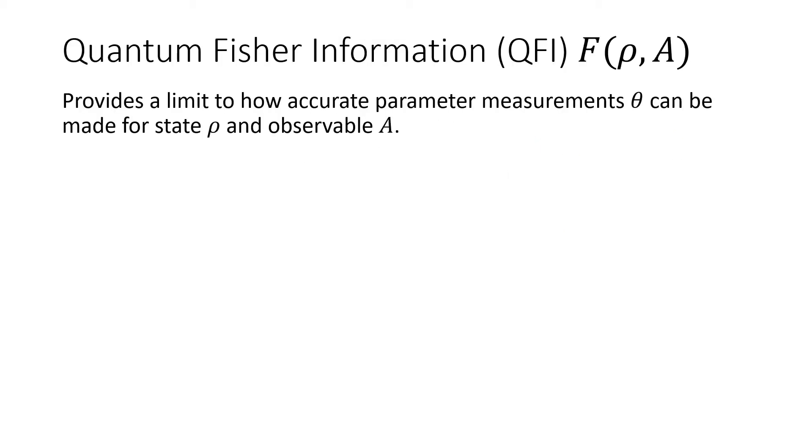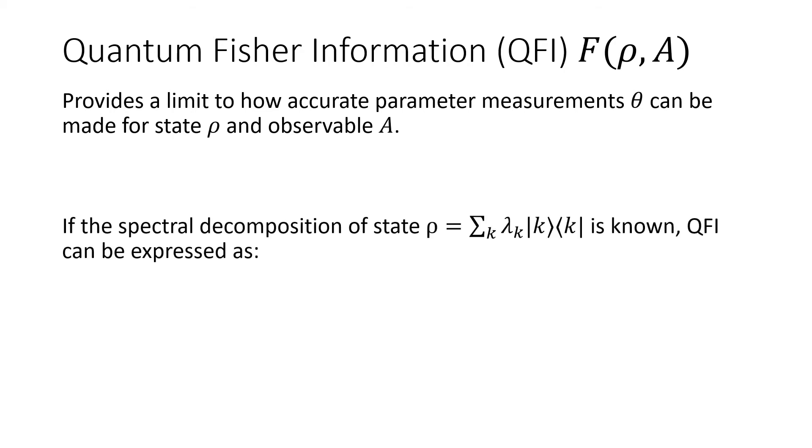Quantum Fisher information, or QFI, is a quantity that provides a limit to how accurate quantum measurements can be made. The QFI can be explicitly expressed if the spectral decomposition of the state, ρ, is known.